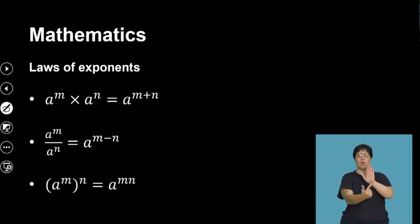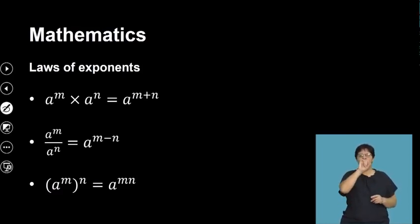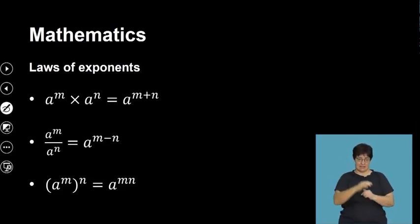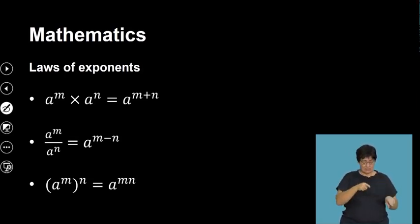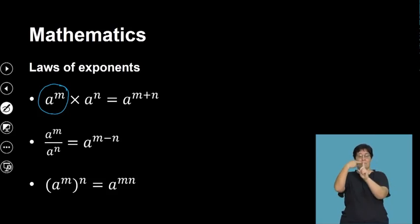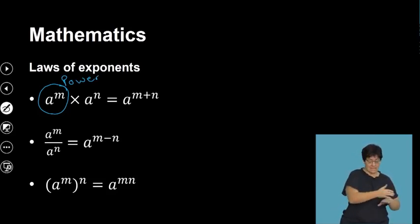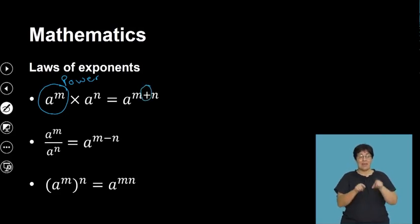So we have what we call the laws of exponents. We normally use letters — variables — to show the laws. The first law: a to the exponent of m multiplied by a to the exponent of n equals a to the exponent of m plus n. When we're multiplying powers of the same base, the rule is we add the exponents.